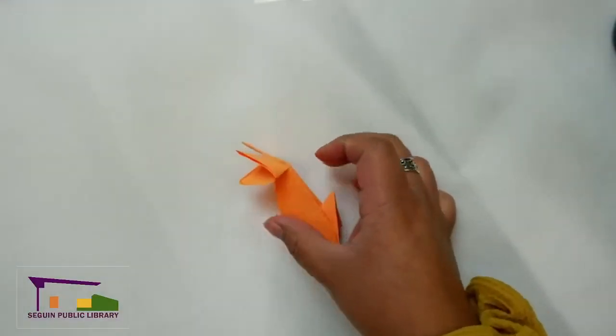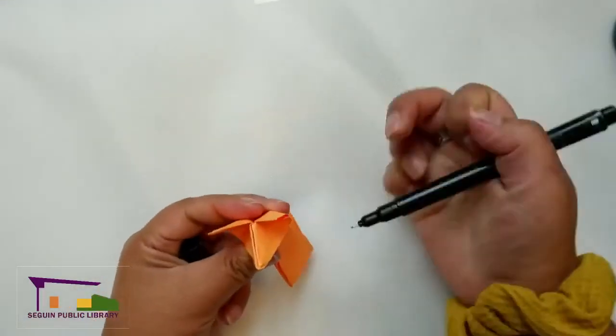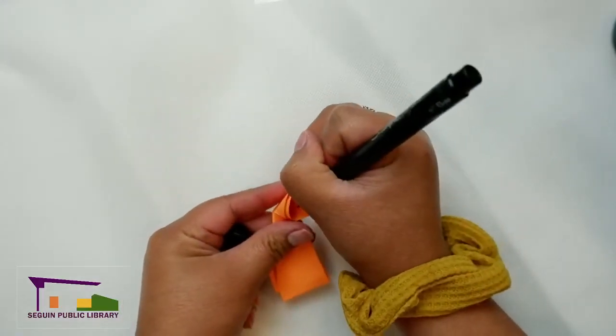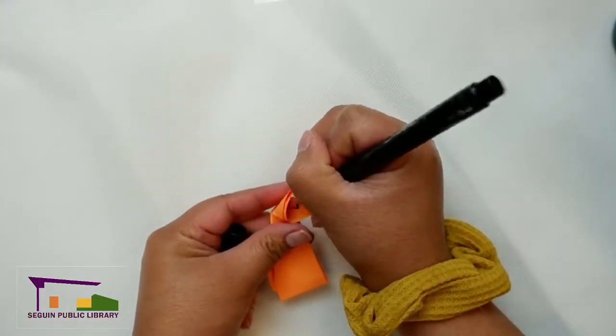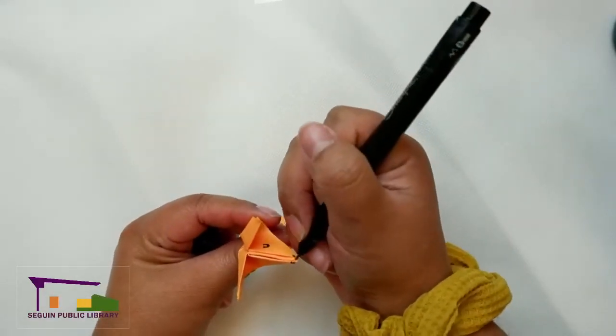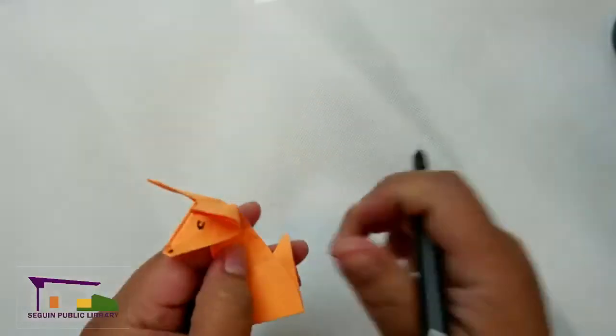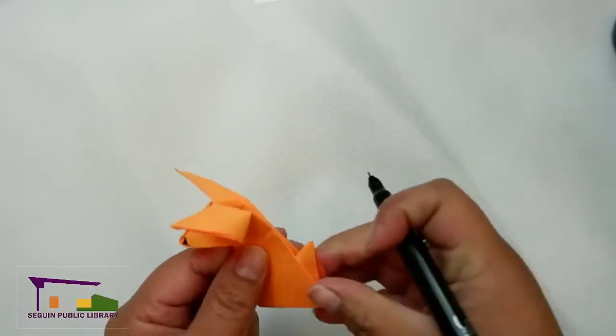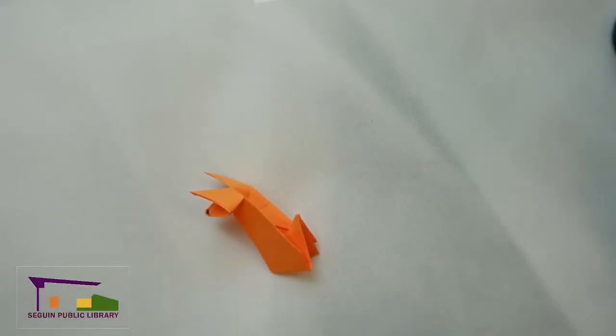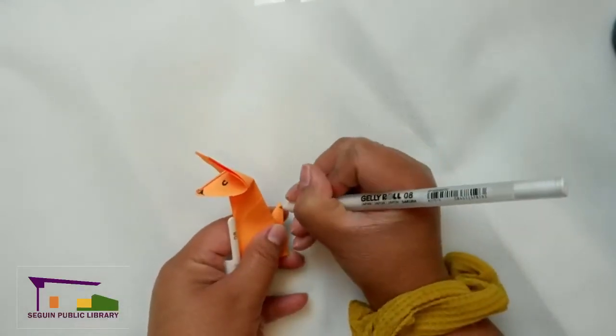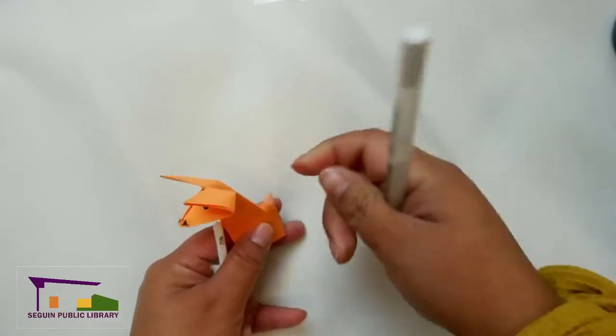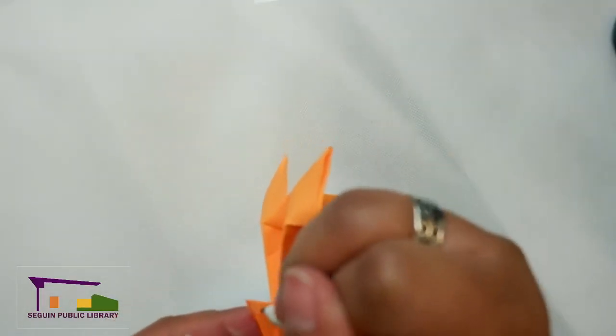Now we can draw a face on our fox. Taking a marker, we'll give him a couple of little eyes and a little black nose. And we can draw on his tail. I've got a white gel pen. You don't have to do this, but if you have it, you can add it on. You could add it with some paint. However you like, you could glue on a little piece of white paper if you want to add to it. But there's his little white tail tip.